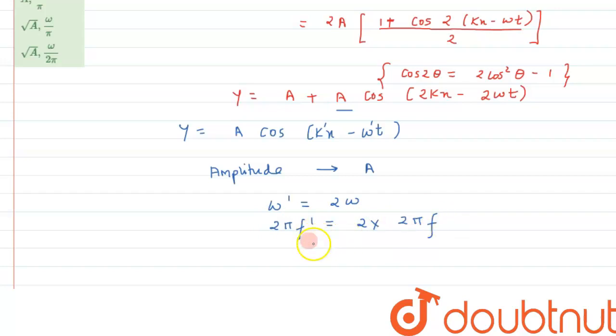So from here we can see that the value we are getting will be f dash will be nothing but omega by pi.